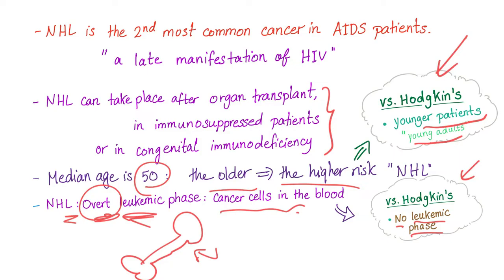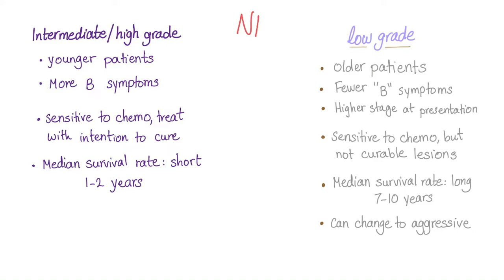Non-Hodgkin's lymphoma can be either intermediate or high-grade, also known as aggressive, or low-grade, also known as indolent — lazy, slow.